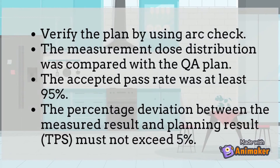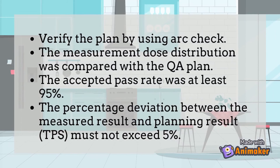The plan was verified using ArcCheck. The measured dose distribution was compared with the QA plan. The accepted pass rate was at least 95%, and the percentage deviation between the measured result and the planning result must not exceed 5%.